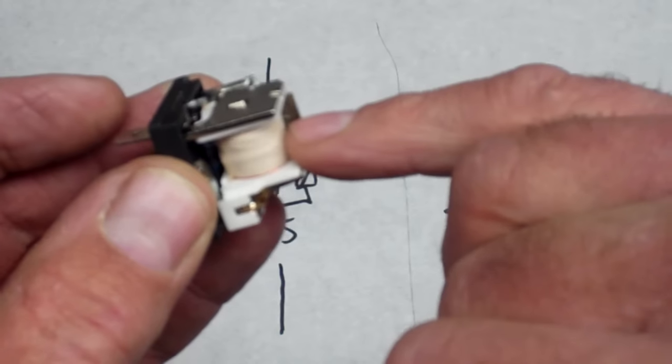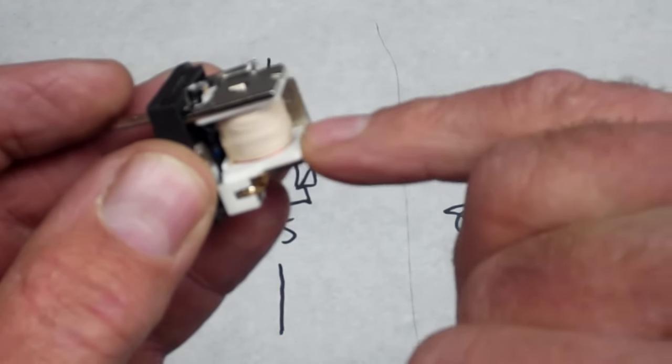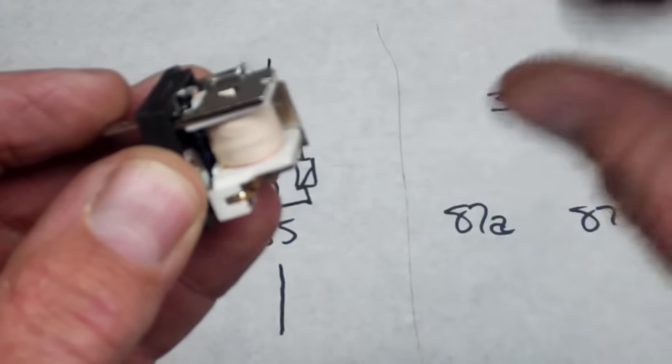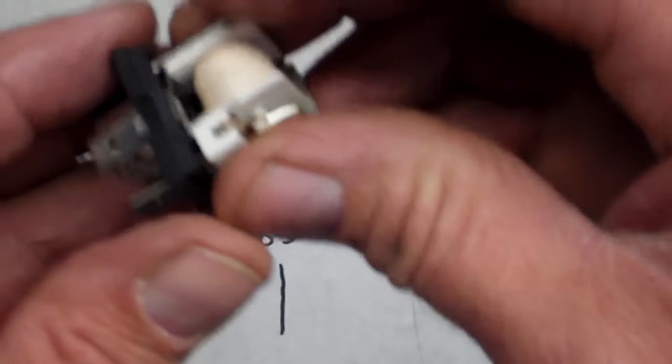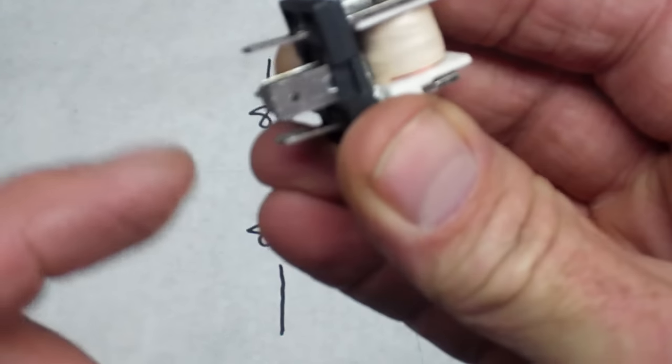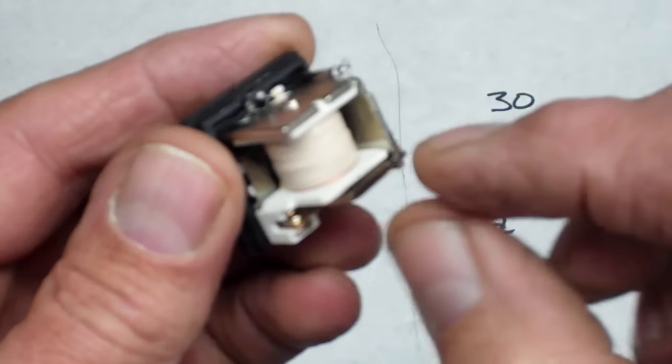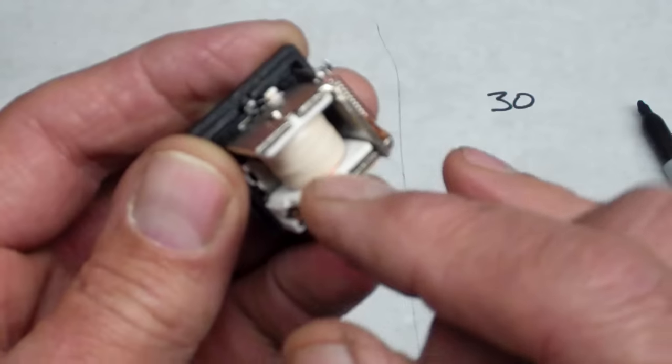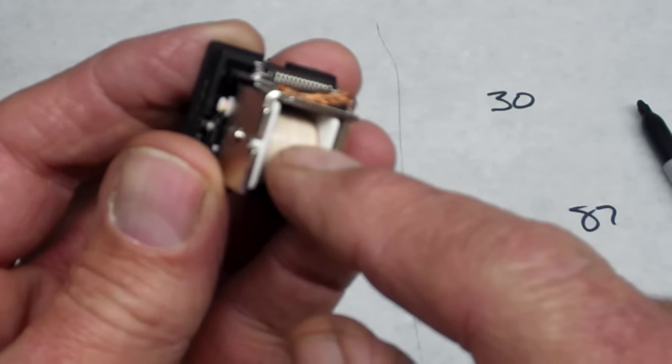So this coil of wire right here is connected to terminals 86 and 85. What happens is when I put current into 86 and out 85, then I create a magnetic field around this coil of wire.